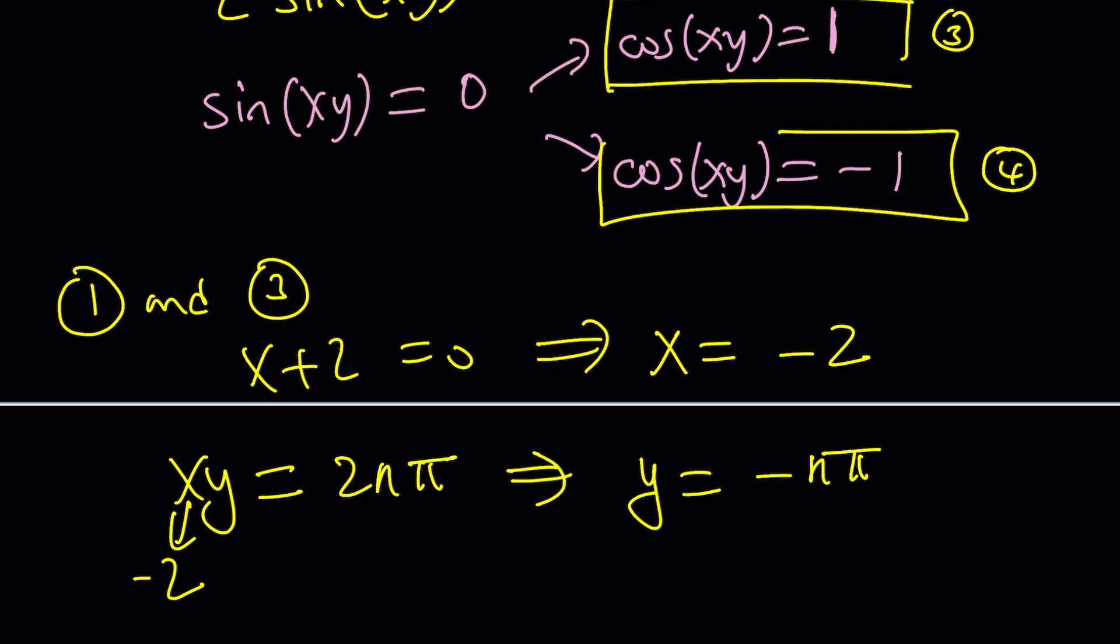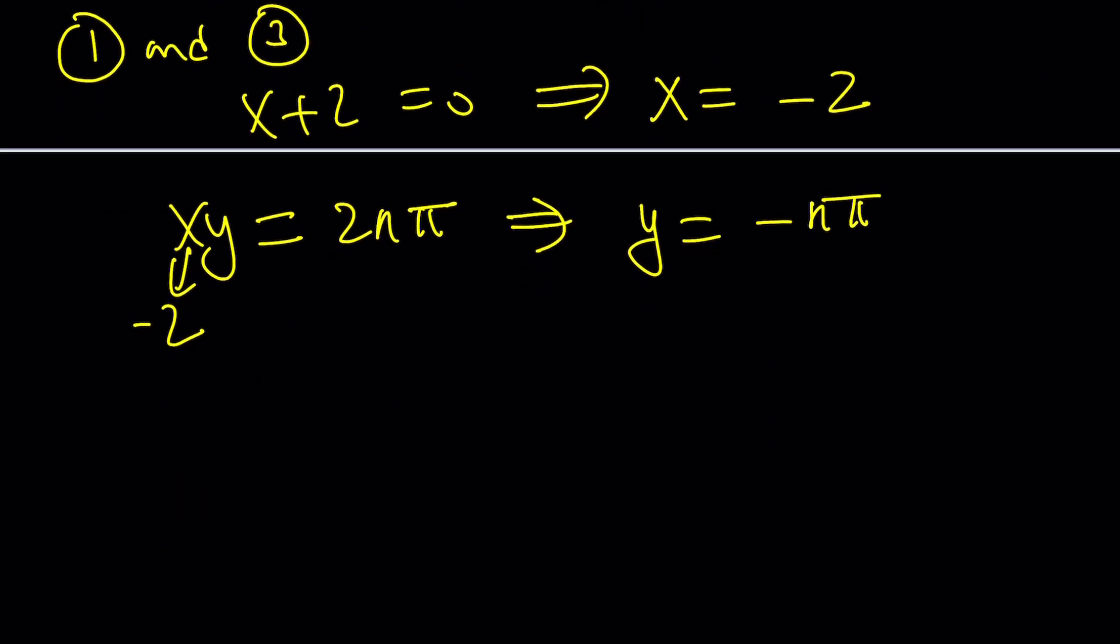We're basically talking about any multiple of pi here. So x is negative 2, and y is like something like k pi. So this is going to satisfy our equation. That comes from 1 and 3.